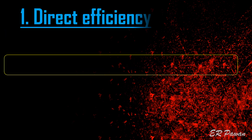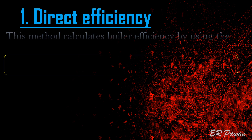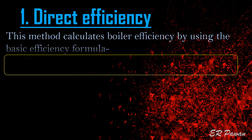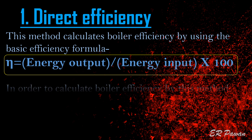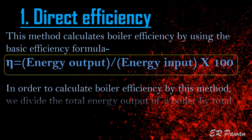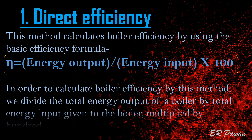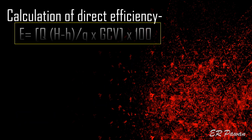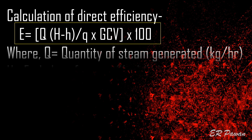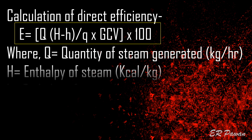Direct efficiency: this method calculates boiler efficiency by using the basic efficiency formula. In order to calculate boiler efficiency by this method, we divide the total energy output of a boiler by total energy input given to the boiler, multiplied by 100. The formula is: E = Q × (H − h) / (q × GCV) × 100.